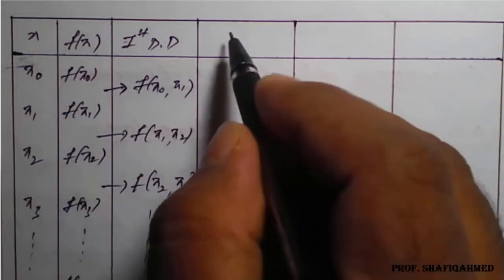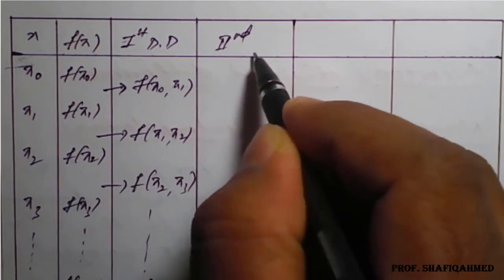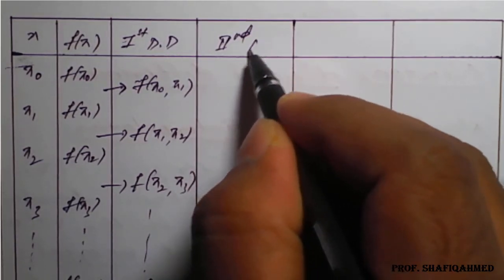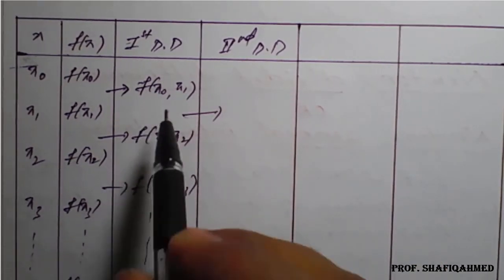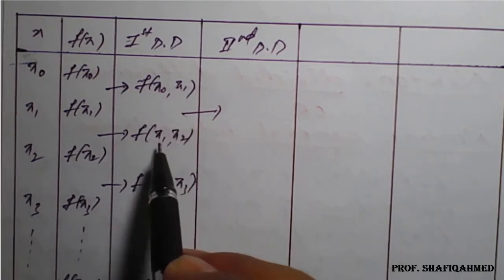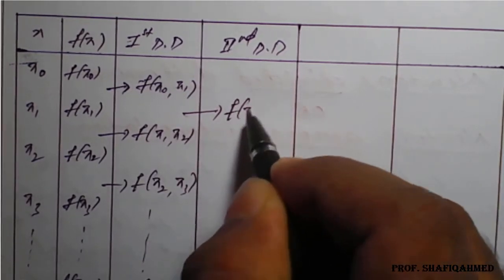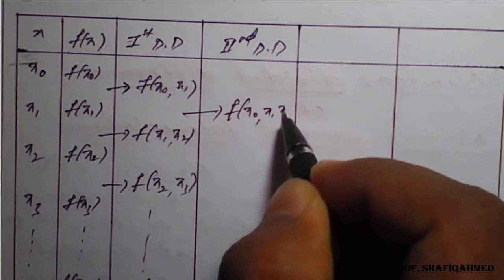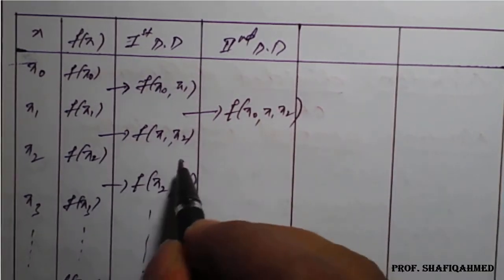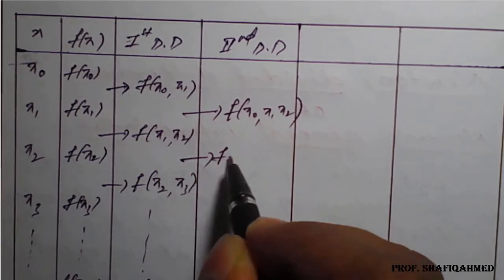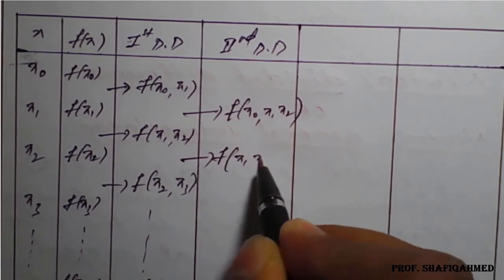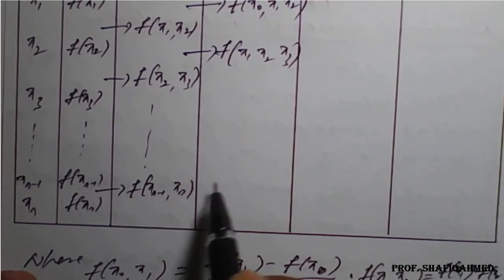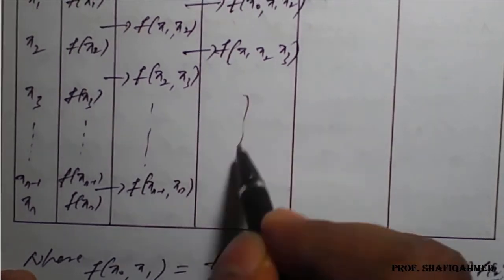Next, the second divided difference. For the second difference, we take the difference between adjacent first divided difference entries. The variables involved are x0, x1 and x1, x2, so this gives f[x0, x1, x2]. Similarly, taking the difference between f[x1, x2] and f[x2, x3] gives f[x1, x2, x3], and so on.